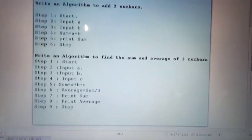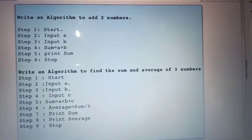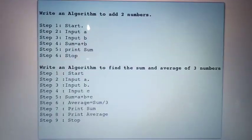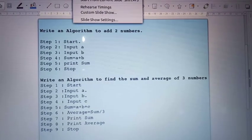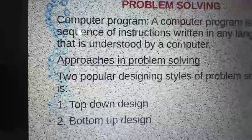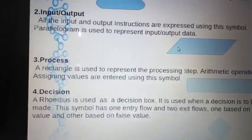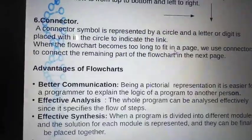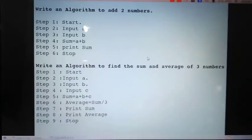We have to use a flowchart. This is an algorithm. We have to add a sum and average of three numbers. The flowchart is a picture representation of the process. This is our algorithm.